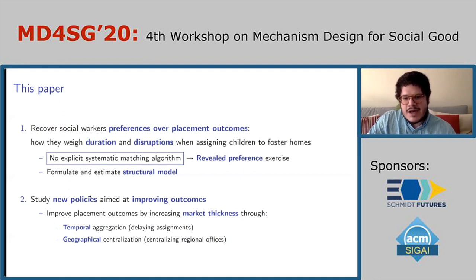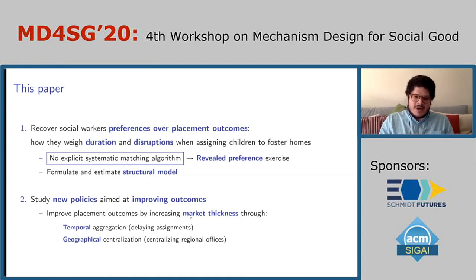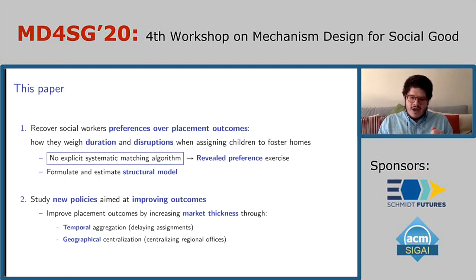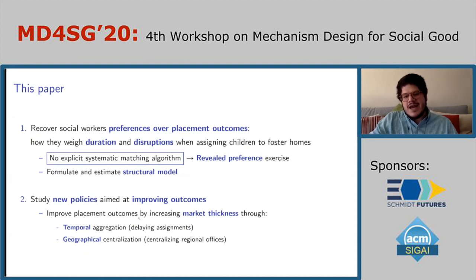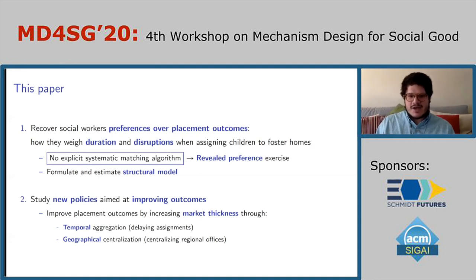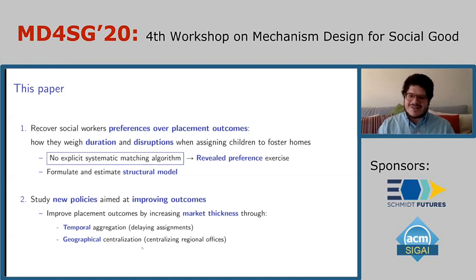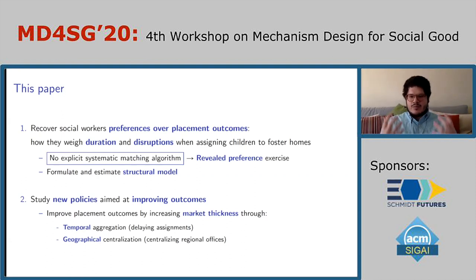The policies I look at are aimed to improve placement outcomes by increasing market thickness along two dimensions. The first is temporal aggregation: what would happen if instead of matching children every day as they enter the system, social workers would delay assignments — matching every three days, every five days, every week, etc. The other dimension is geographical centralization: what would happen if we centralized the regional offices in Los Angeles County into a thicker market, which could potentially lead to better matches.